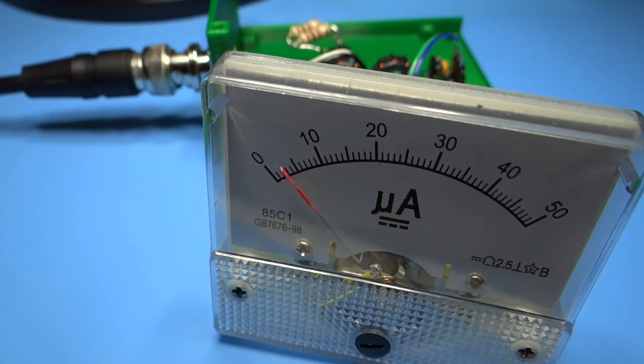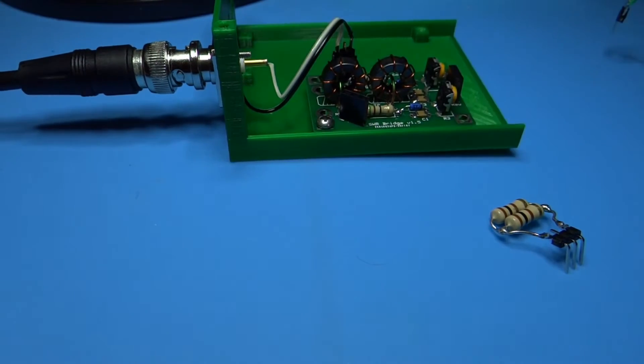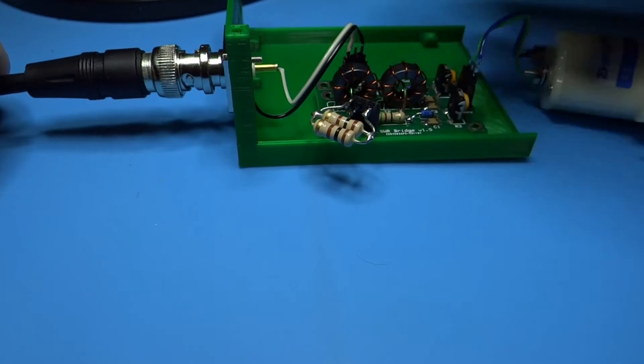...connect the RF source to the output or antenna side of the bridge and a dummy load to the input. Then adjust the reverse trimmer until the meter displays the same value as it did for the forward connected power and load.